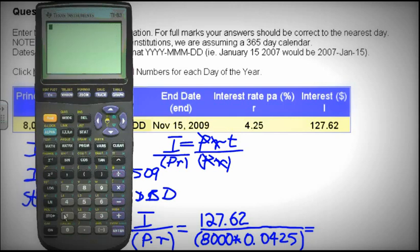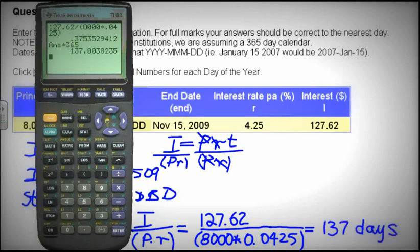Plugging in the values: 127.62 divided by 8,000 times 0.0425. Make sure you use parenthesis in here. Equal 0.375 years times 365 days gives us 137 days.